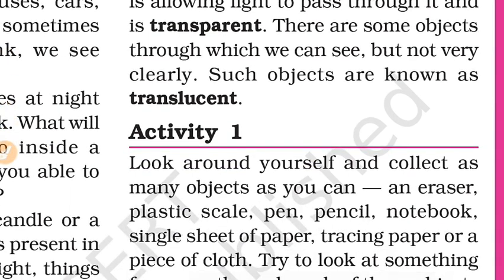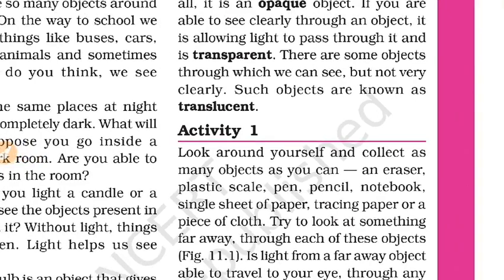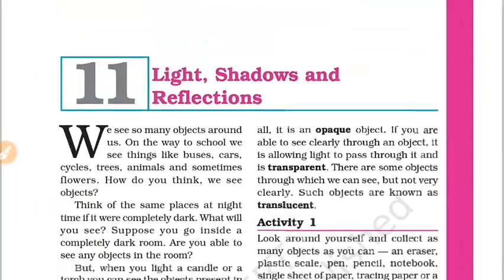Next, what is a translucent object? A translucent object allows some light to pass through, but the image seen through it is not completely clear. So that is the difference between transparent and translucent. This is the chapter on Light, Shadows and Reflections.